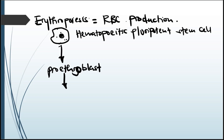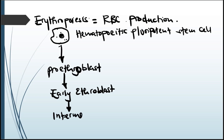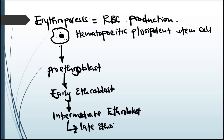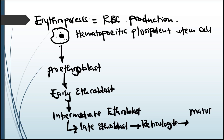The pro-erythroblast will then differentiate into an early erythroblast. The early erythroblast will turn into an intermediate erythroblast. The intermediate erythroblast will then turn into a late erythroblast, which will turn into a reticulocyte, and then into a mature red blood cell. This is red blood cell maturation in the bone marrow.